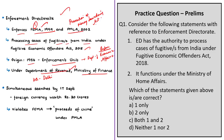While FEMA is a civil law, the Prevention of Money Laundering Act of 2002 is a criminal law. Under PMLA, the Enforcement Directorate has the power to conduct inquiries, locate and provisionally attach unlawful assets, and arrest and prosecute money launderers. A recent current affairs example is the money laundering case lodged by the Enforcement Directorate against former Finance Minister P. Chidambaram in 2017, who was under ED custody.